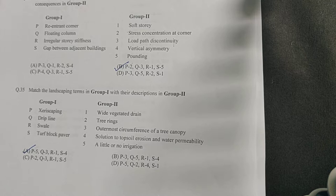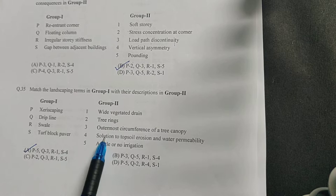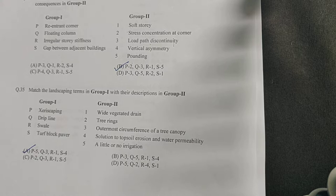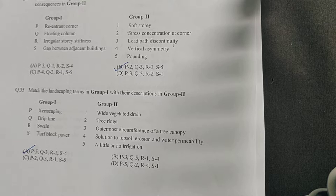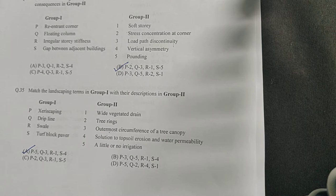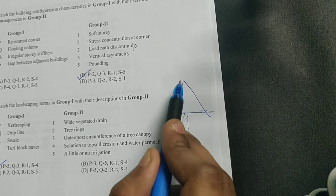Next is drip line. Drip line basically refers to the outermost circumference of a tree canopy. If you see a tree canopy like this, water would be dripping like this, so this circumference is known as a drip line.